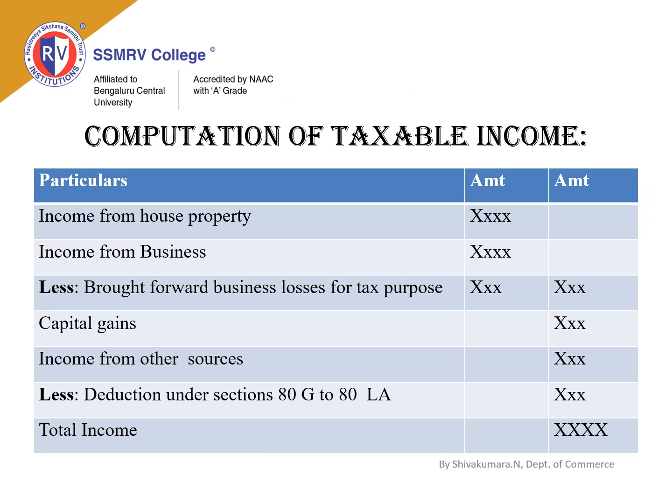The simple format for computation of taxable income is as follows: start with income from house property; add income from business or profession, if any; less brought forward business losses for tax purposes; add capital gains; add income from other sources; then deduct deductions under Section 80G to 80LA. The remaining balance will be the total taxable income.